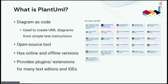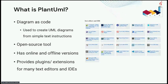PlantUML is a tool that allows us to define simple text instructions and convert them into different types of diagrams, like activity diagrams, sequence diagrams, class diagrams, use case diagrams, and even JSON visualizations. It is an open source tool with online and offline editors where you enter text instructions and PlantUML processes them to show the diagram. We can save instructions as text files and export diagrams in PNG, SVG, and other image formats. It also provides extensions for many text editors and IDEs like Visual Studio Code and Atom.